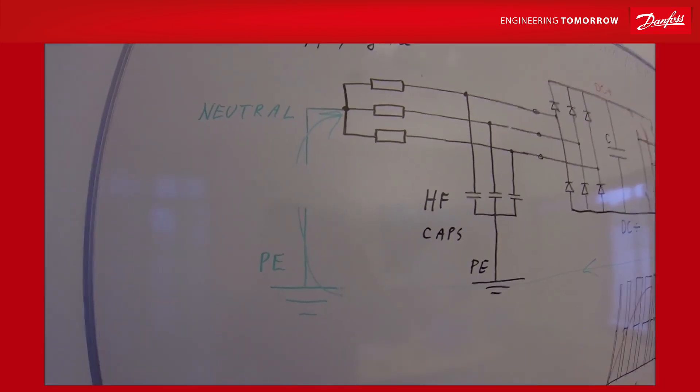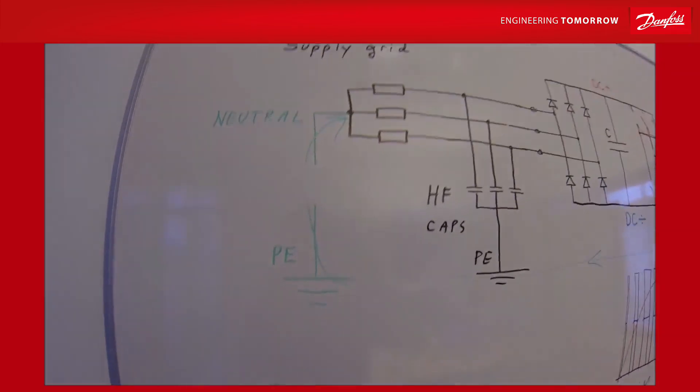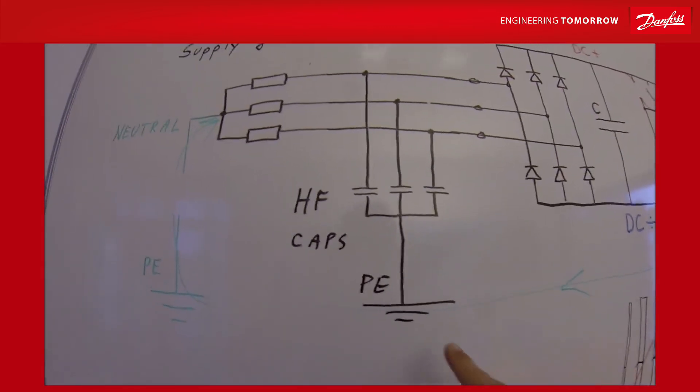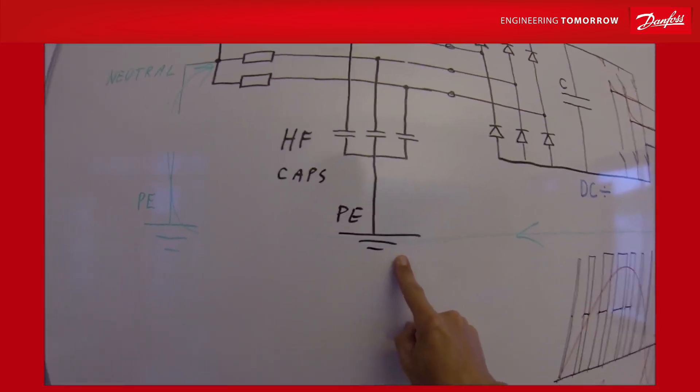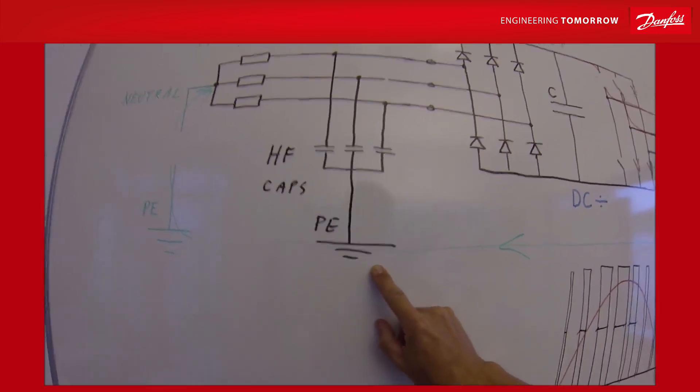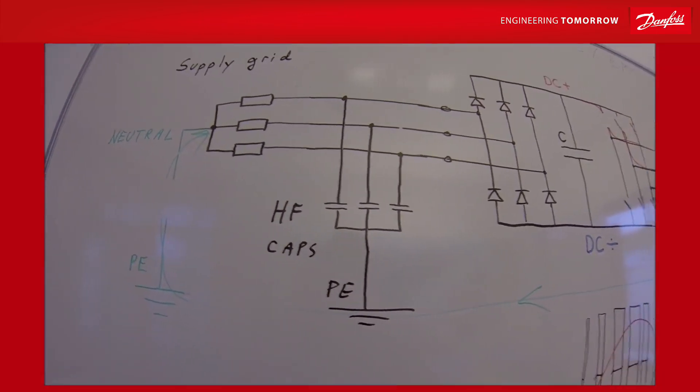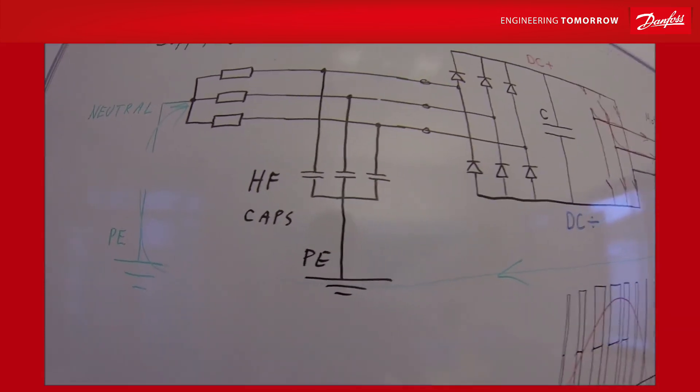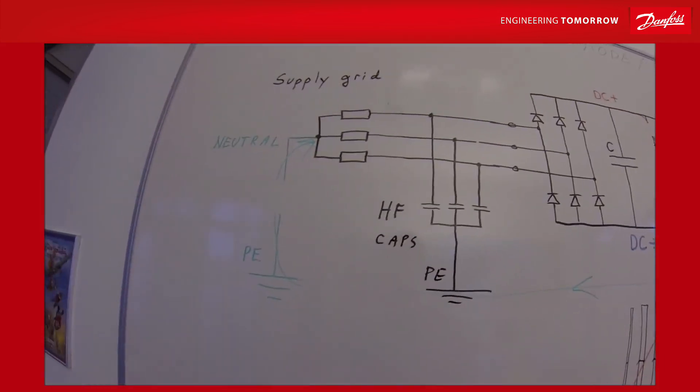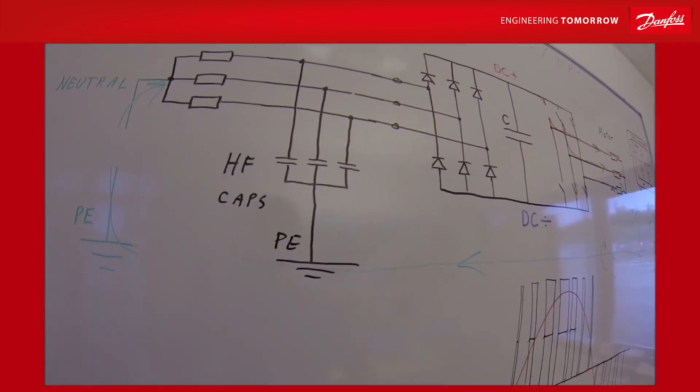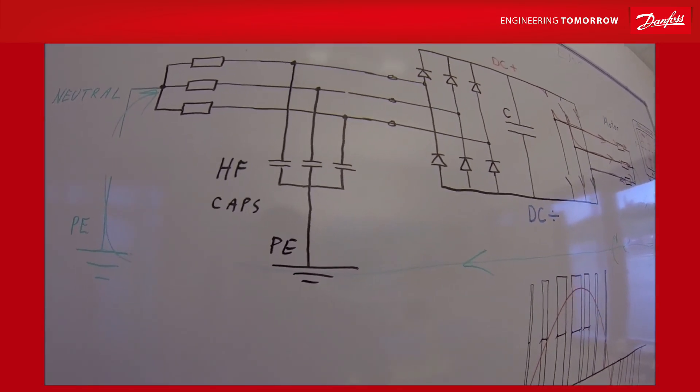The high frequency caps can be used when you have a grounded system like in buildings onshore, or when you have TNS and TN kind of supply grids. But onboard ships, this might be a problem because the ground is floating. You have a so-called IT power system. Then you are not allowed to use these HF caps directly to the protective earth. So it is a little bit different between onshore installations and offshore installations in maritime industry.